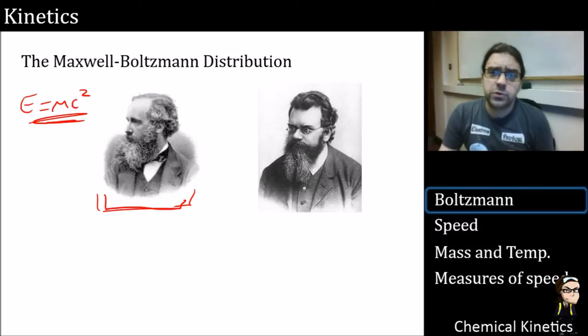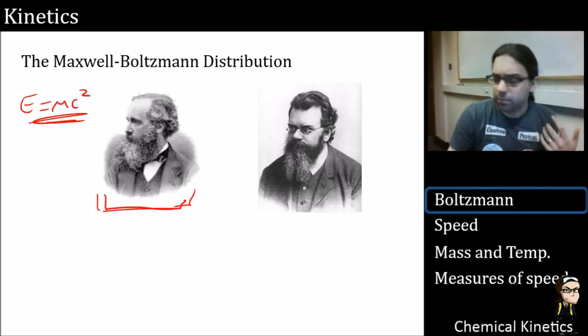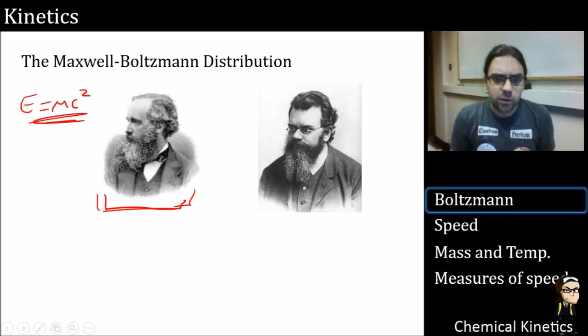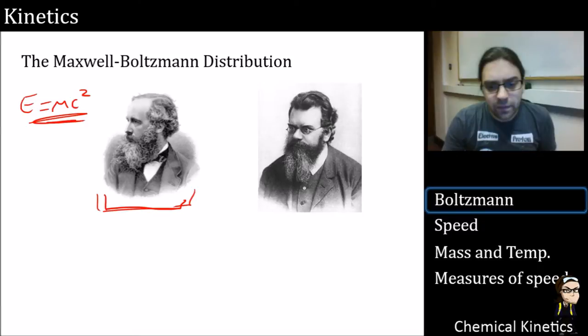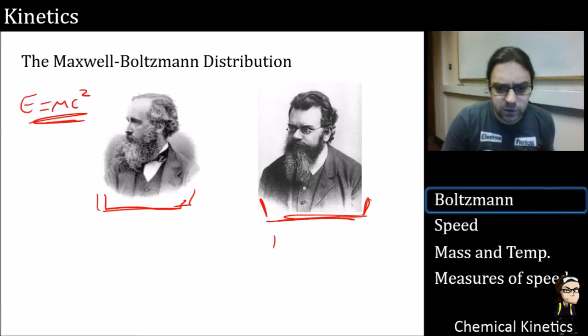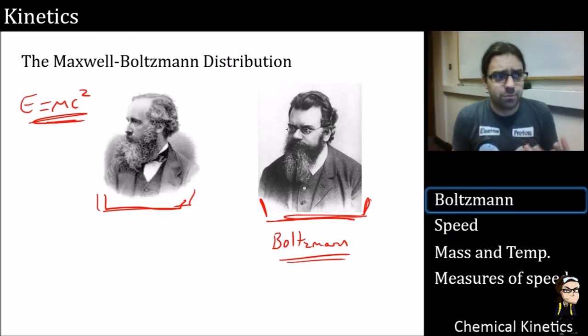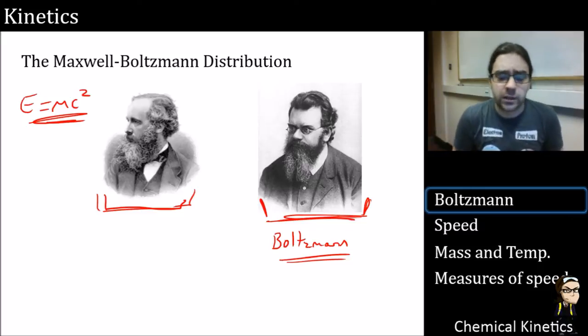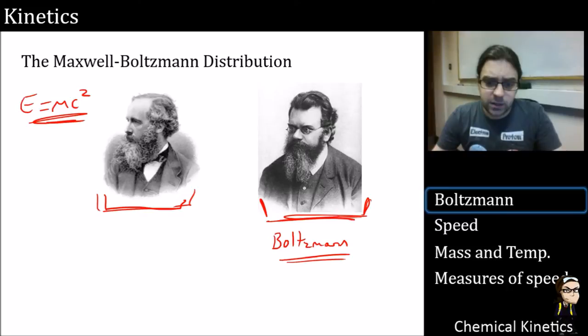Maxwell also did a lot of kinetic theory of gases. He fiddled around with gases and got a bit of what we're about to discuss together. And then that was all refined by Ludwig Boltzmann. We name a lot of things after Boltzmann - the Boltzmann distribution, the Boltzmann constant. If you get a constant named after you, you know you've been quite successful with your science.